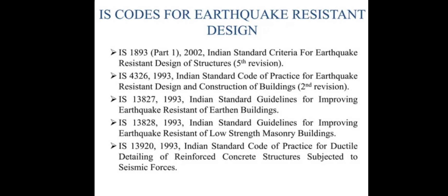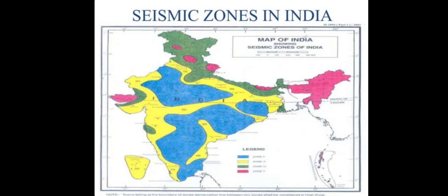Now let's look at the IS codes used in earthquake resistance design. IS 1893 lists the criteria for earthquake resistance design. IS 4326 covers earthquake resistance construction of buildings. IS 13827 is used for improving earthquake resistance. IS 13828 is used for improving earthquake resistance of low-strength masonry buildings. IS 13920 is the code of practice for ductile detailing of reinforced concrete structures subjected to seismic force.